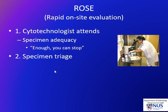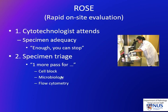The other very important function of ROWS is specimen triage. This actually helps to direct the clinician to obtain more material — to go in and do more passes for ancillary testing, for example with cell blocks, for microbiologic testing, and also for flow cytometry when we suspect hematolymphoid malignancy.